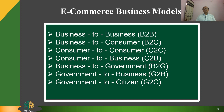On screen, you can see there are seven business models: B to B, B to C, C to C, C to B, B to G, G to B, and G to C. Now we will discuss each one by one.